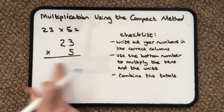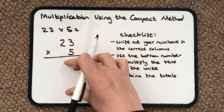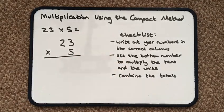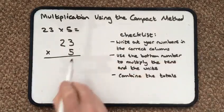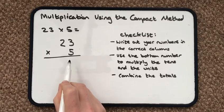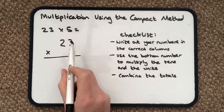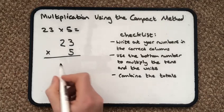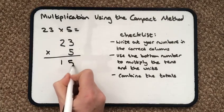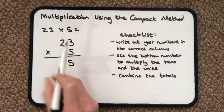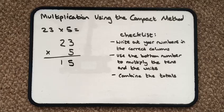Now I'm actually just going to write one part of the equals sign because I'm going to have the expanded version first to show you. So it says use the bottom number to multiply the tens and the units. So if I multiply 5 times 3, I get the answer 15. And then if I do 5 times 20...